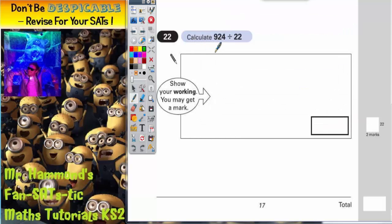Question 22. Calculate 924 divided by 22. As soon as you're dividing by a number bigger than 12 into the teens or the 20s or the 30s, then basically we are talking about long division.